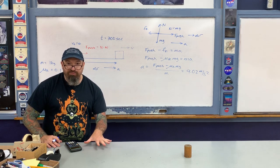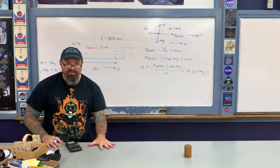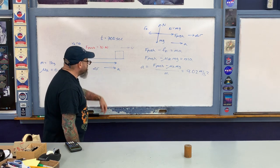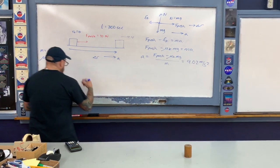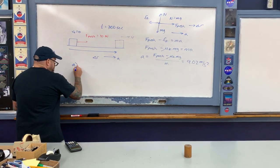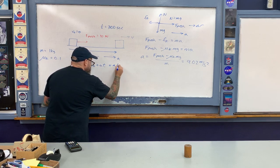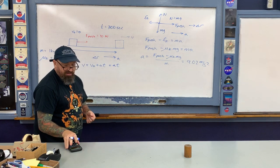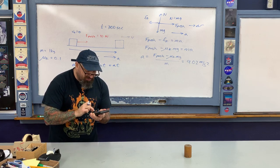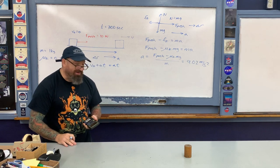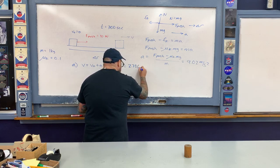Now for part a, we do one-dimensional kinematics to find the final speed. Using v = v₀ + at, and since the object starts at rest, v = at = 9.02 m/s² × 300 seconds, which gives 2706 meters per second.